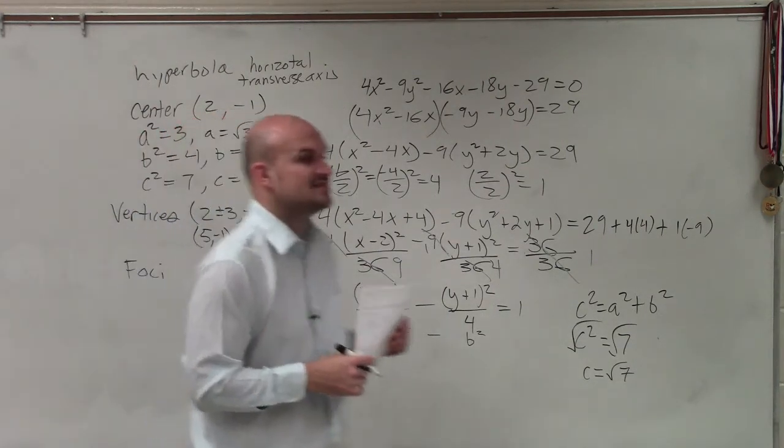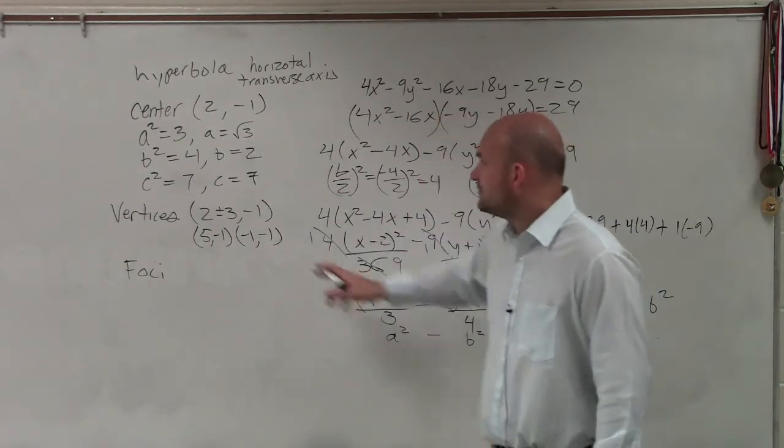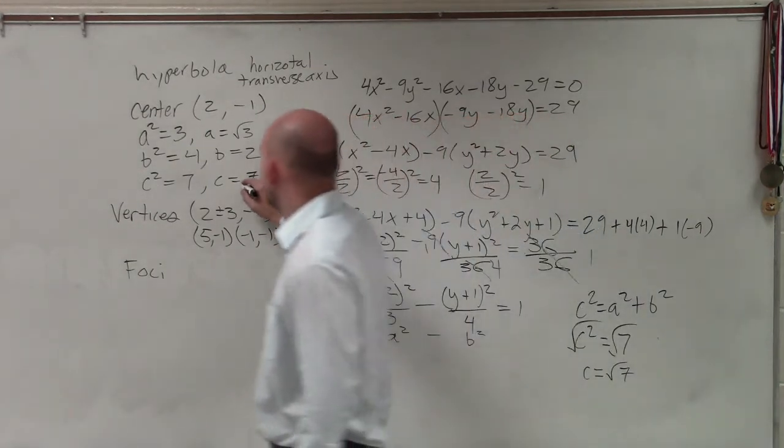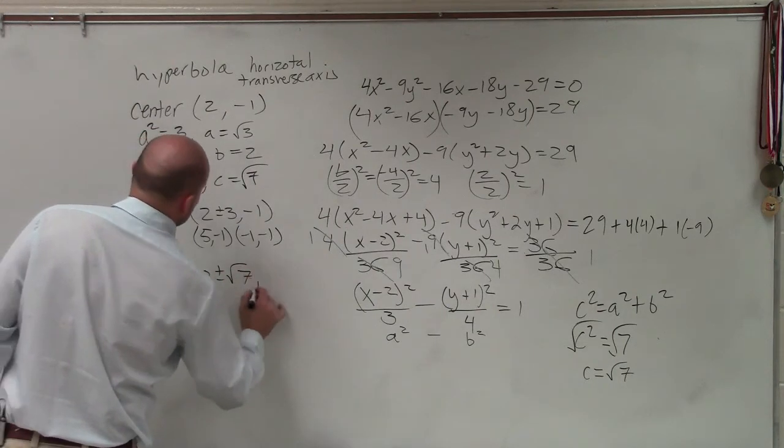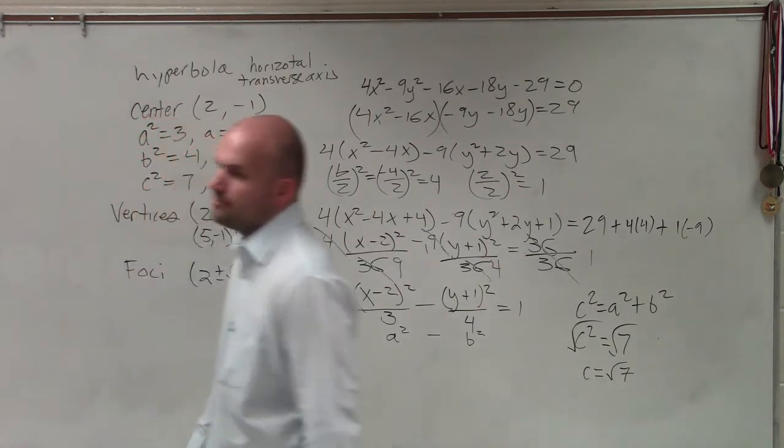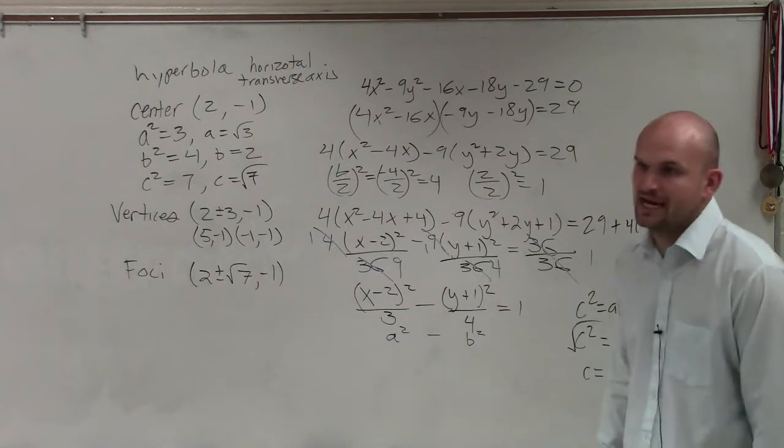Then the foci. The foci have a distance of c. Since we figured out the value of c, which is the square root of 7, we're going to say 2 plus or minus the square root of 7 minus 1. You don't need to break that one apart. I'll accept it like that, since it cannot be really simplified.